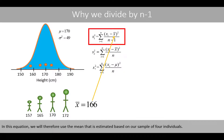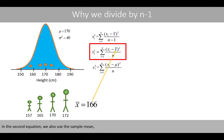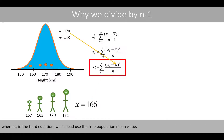In the third equation, we will use the true population mean value. In the second equation, we also use the sample mean — that is, the mean estimated based on our sample of four individuals — whereas in the third equation, we instead use the true population mean value.